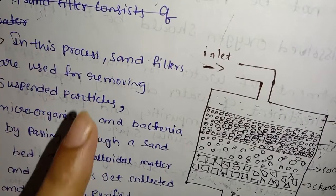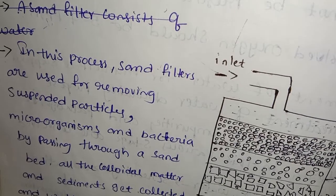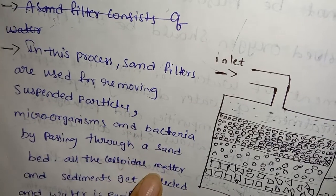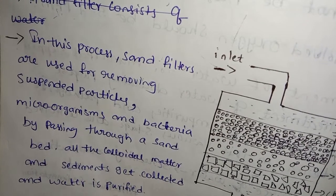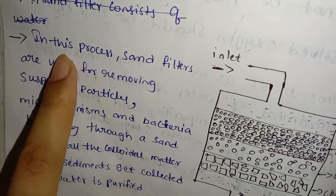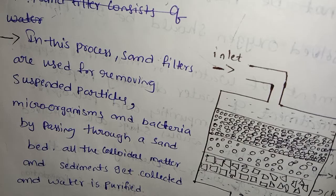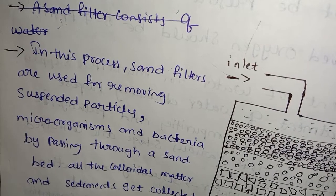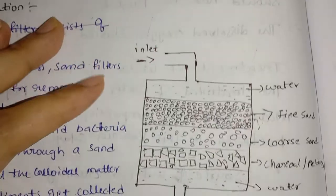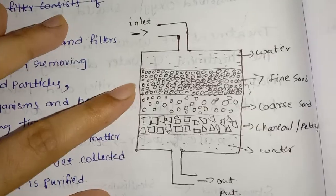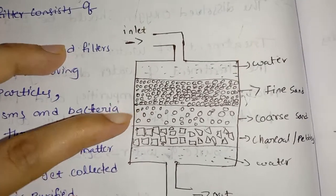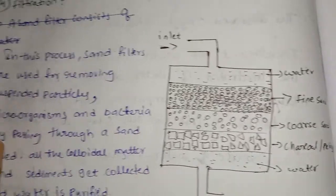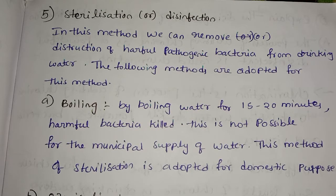In the filtration process, sand filters are used for removing suspended particles, microorganisms and bacteria by passing water through a sand bed. All the colloidal matter and sediments get collected and the water is purified. The filter layers include fine sand, gravel, and pebbles.